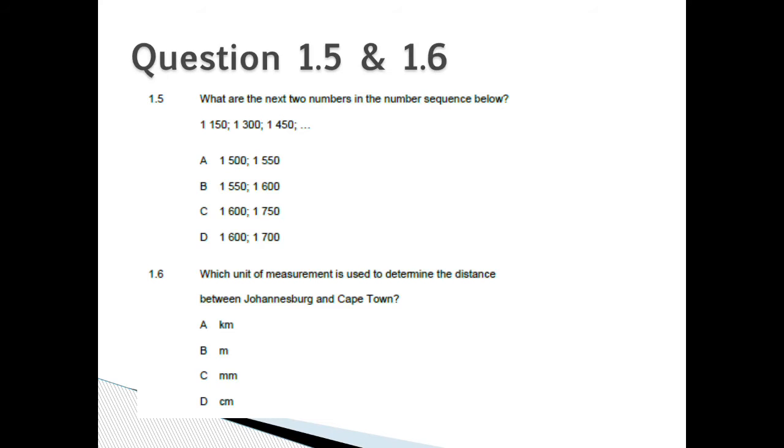Question 1.5: What are the next two numbers in this sequence below? 1,150, 1,300, 1,450. Is it A. 1,500 and 1,550, B. 1,550 and 1,600, C. 1,600 and 1,750, or D. 1,600 and 1,700? Question 1.6: Which unit of measurement is used to determine the distance between Johannesburg and Cape Town? Is it A. Kilometers, B. Meters, C. Millimeters, or D. Centimeters?